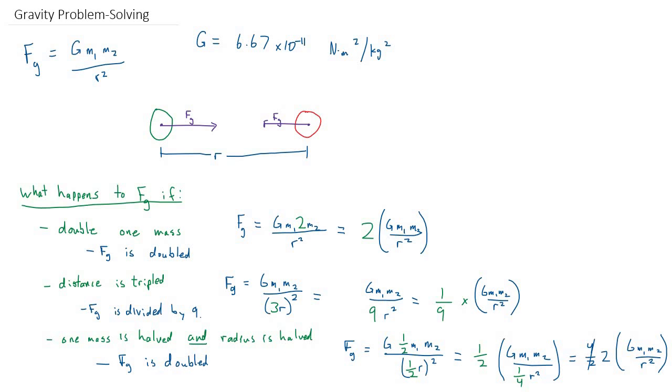Just in case I combined too many steps there, I took my green 1 half, which was divided by 1 quarter. That's the same thing as 1 half times 4 over 1, and that gave me 4 halves, which equals 2. Dividing by a fraction was the same as multiplying by the reciprocal. The technique we use is to take that multiplying factor and bring it out to the front to see what would happen to the overall force of gravity.